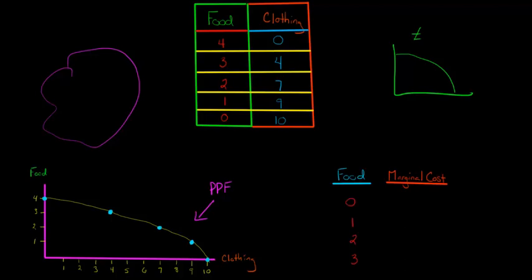As we go from zero units of food produced and 10 units of clothing produced, and we go from 10 units of clothing to 9 units — so we produce one unit of food — we start with zero units of food, all starving, and decide to produce one unit. We go from zero to one unit of food and give up one unit of clothing, because clothing goes from 10 to 9. So we'd say the marginal cost of producing one unit of food, going from zero to one, is one unit of clothing.